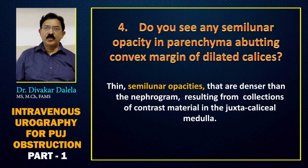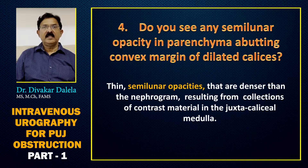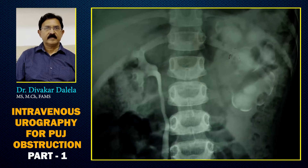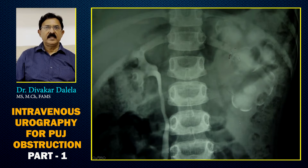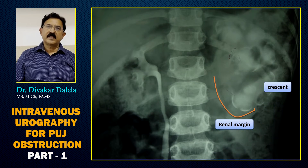Next, you should try to observe whether you see any semi-lunar opacity in the parenchyma abutting the convex margin of dilated calyces. You will often see these thin semi-lunar opacities which are denser than the nephrogram. They result from the accumulation of contrast material in the juxtacalyceal medulla. In the left kidney you will see these denser semi-lunar lines, and these lines in the medulla — with the renal margin lying here — are called crescents.